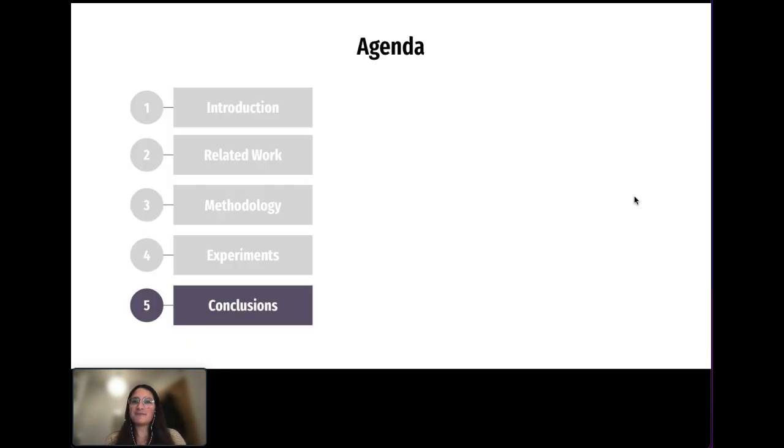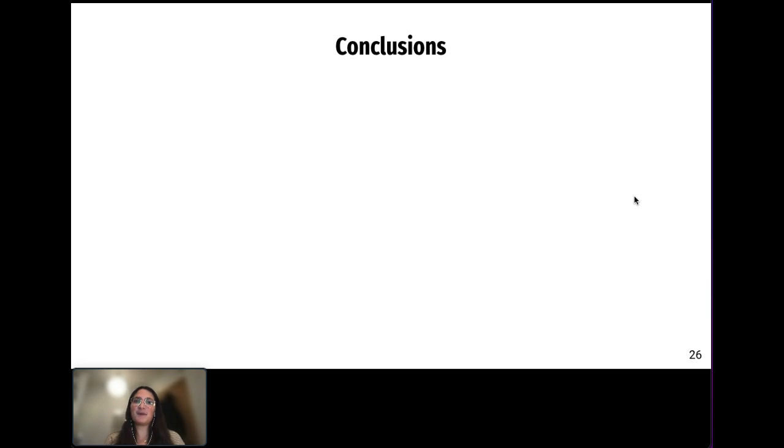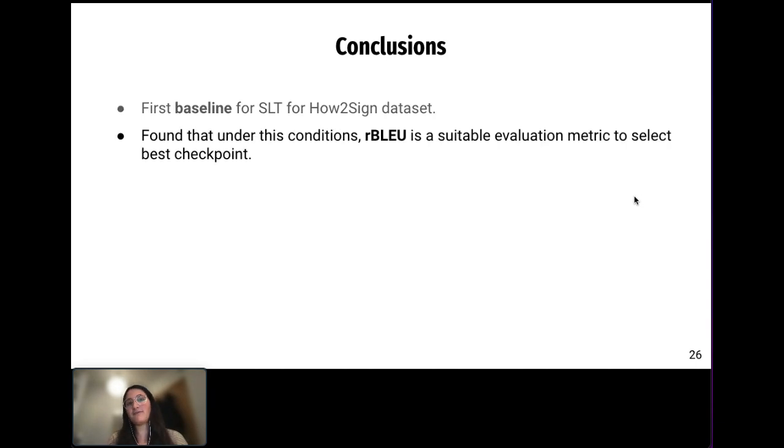Let's jump into the conclusions. In this paper, we have presented the first baseline for sign language translation on the HowToSign dataset. Our evaluations, both quantitative and qualitative, have led us to conclude that reduced BLEU is a suitable metric to select best checkpoints for similar benchmarks, particularly for low-resource datasets with frequent repetitive patterns. Our final contribution is that we make the code, models, and data easily available to allow reproducibility and encourage further research and advancements in the field.